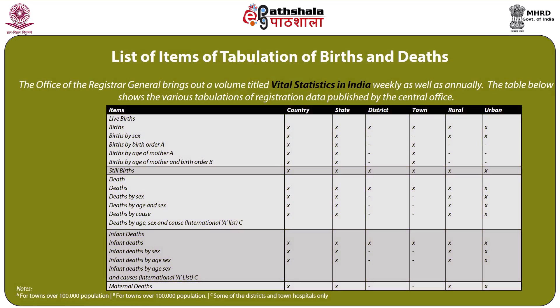Next follows the topic of tabulation. When important indicators are captured and registered, how the data is to be presented is the main aspect of tabulation. The office of the Registrar General brings out a volume titled Vital Statistics in India, published weekly as well as annually. The various tabulations of registration data published by the Central Office of the Registrar General reflect how the data flow is maintained and how it has been tabulated.